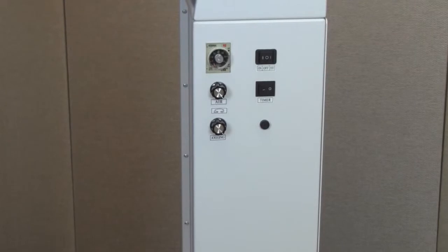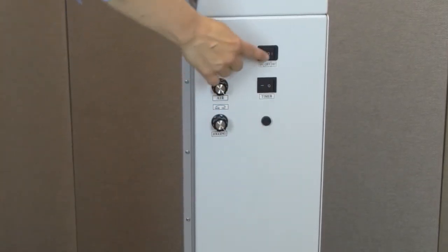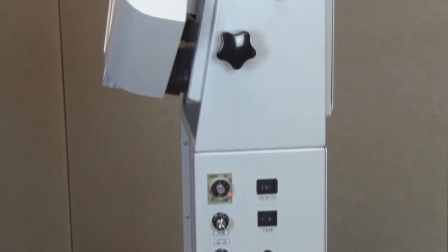To utilize the timer, set the timer switch to the on position, adjust the timer control, and press the on switch. The jogger will automatically stop when the time runs out.